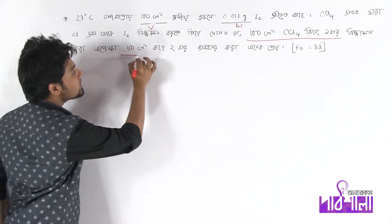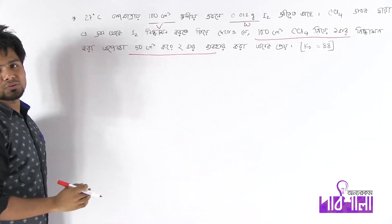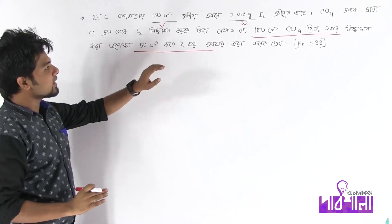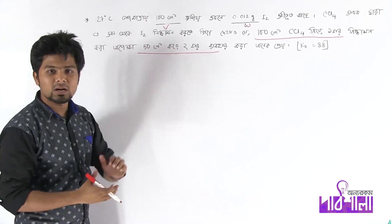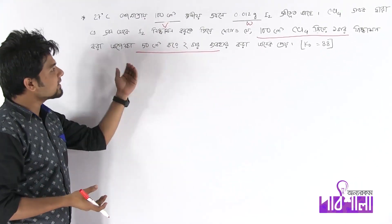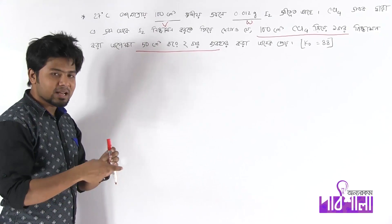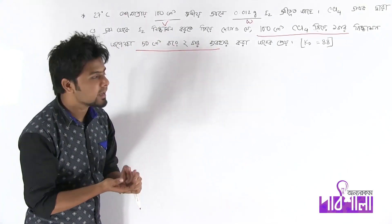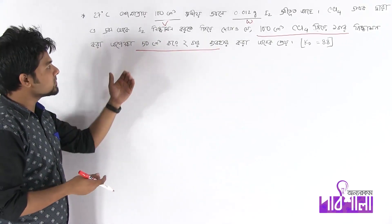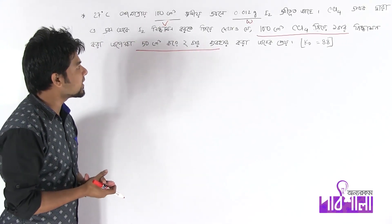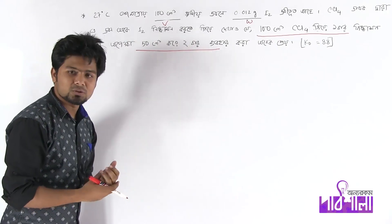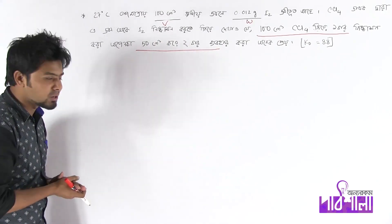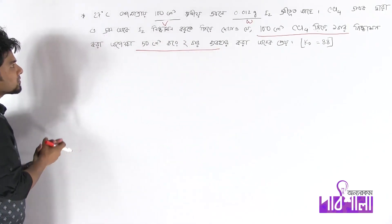50 cm³ করে দুইবার নিষ্কাশন করা অনেক ভালো কেন? আমি না তা জানাবো। 100 cm³ থেকে দুইবার nishkashon করা হলো — 2x nishkashon kora — one x test after, agerar kota connect করো।